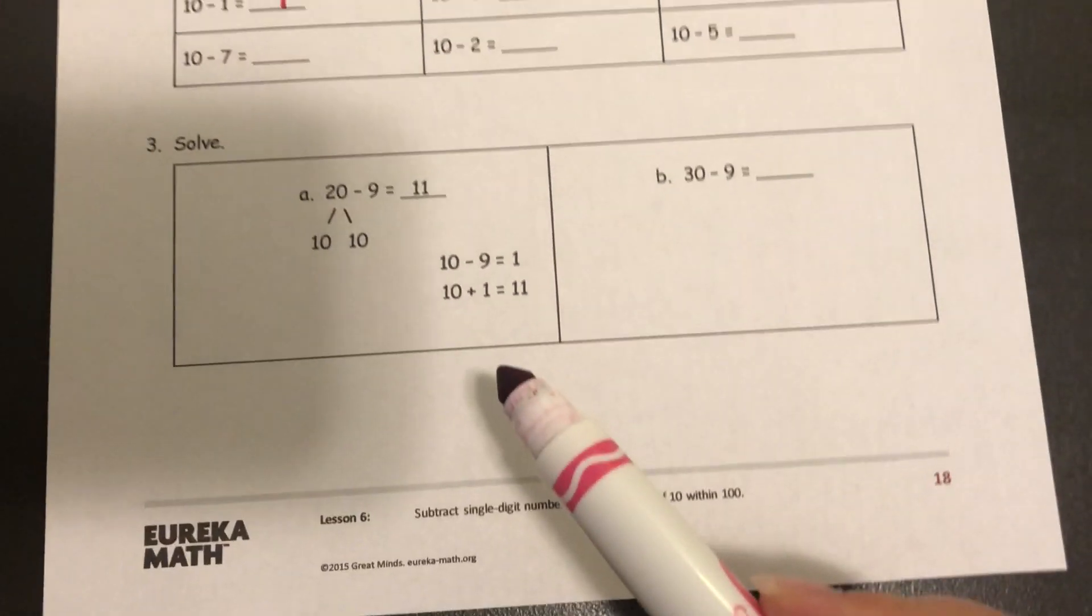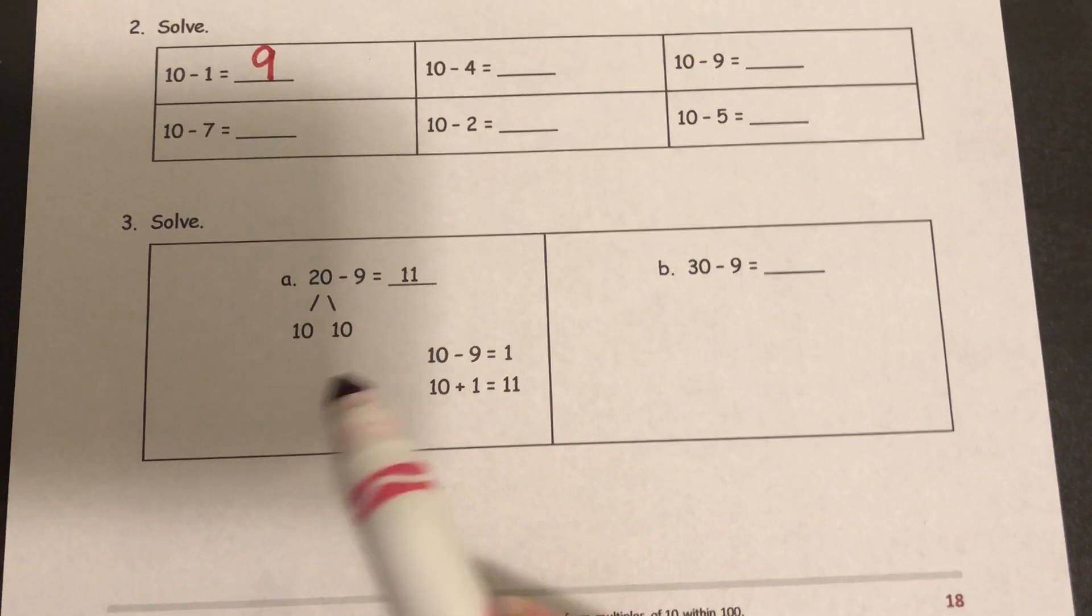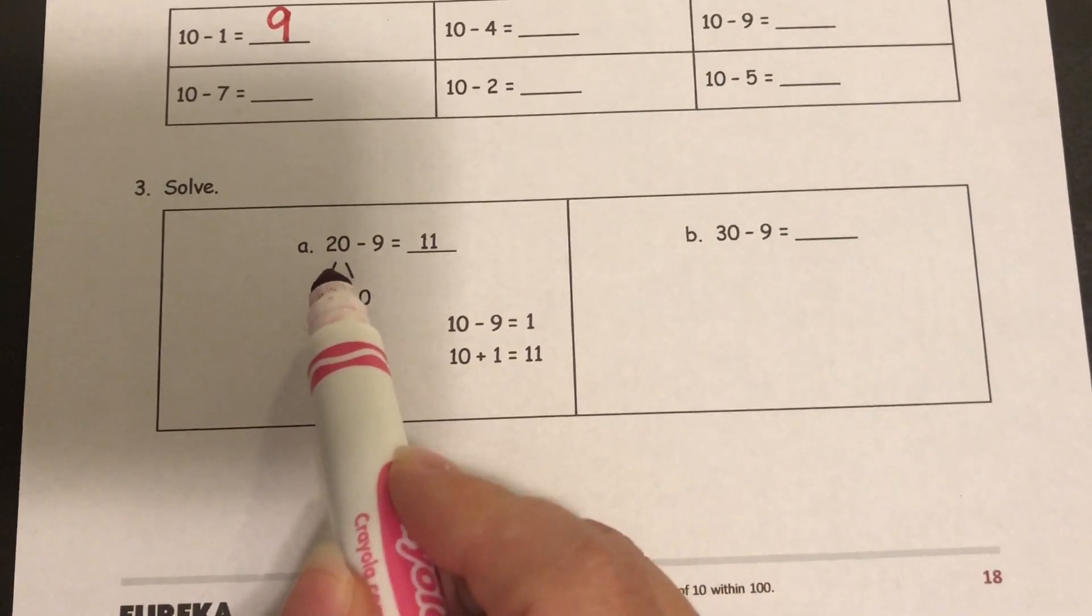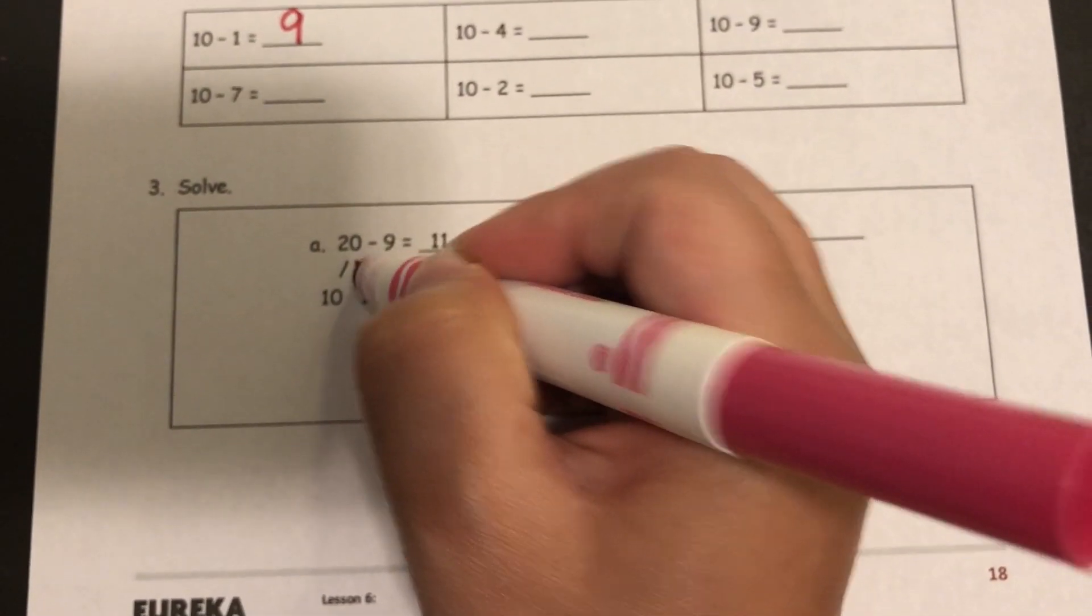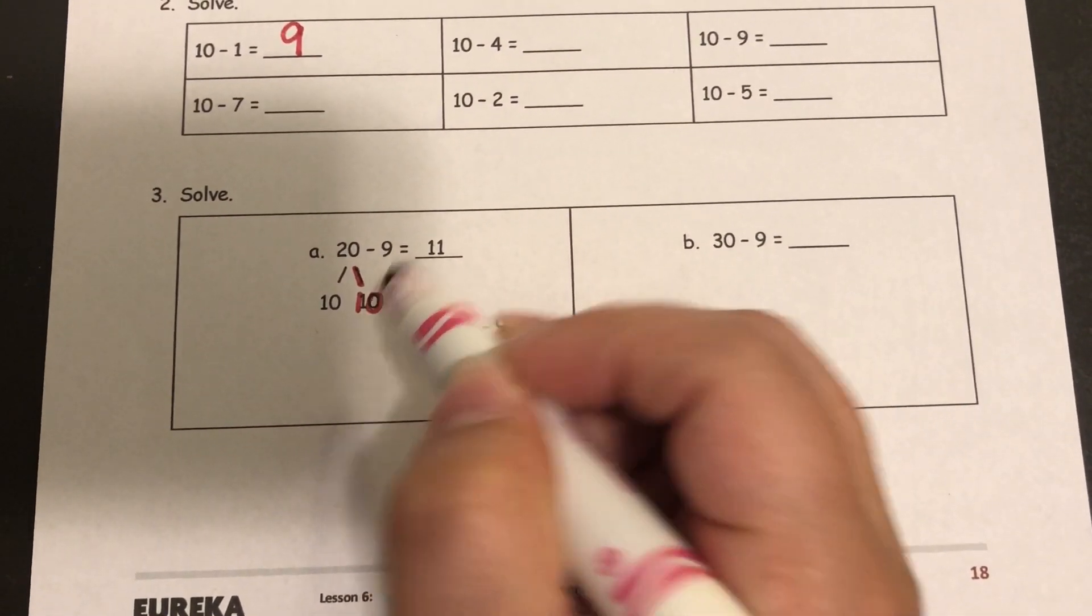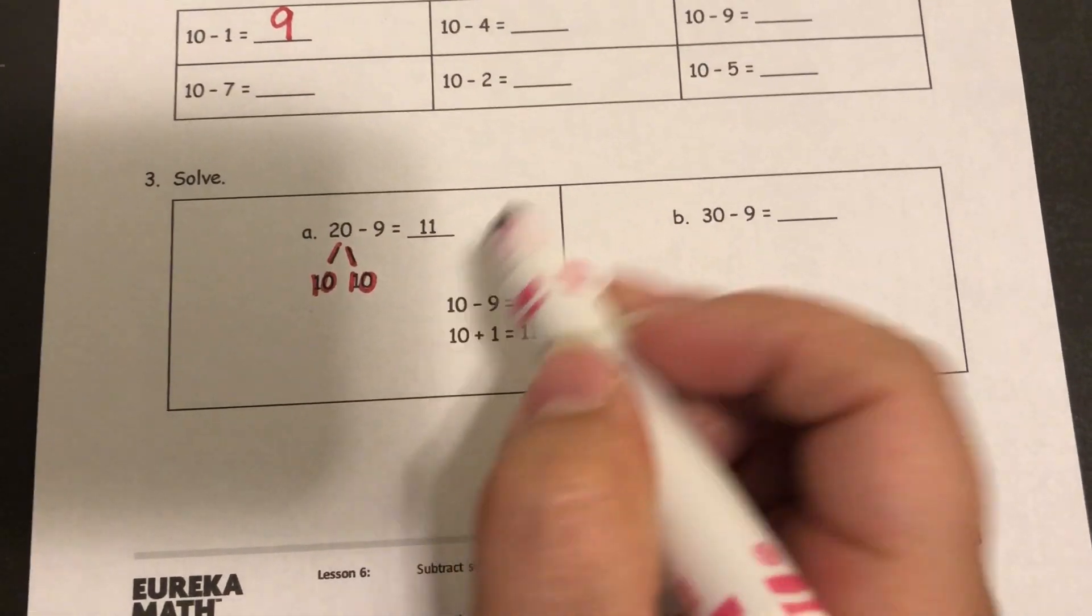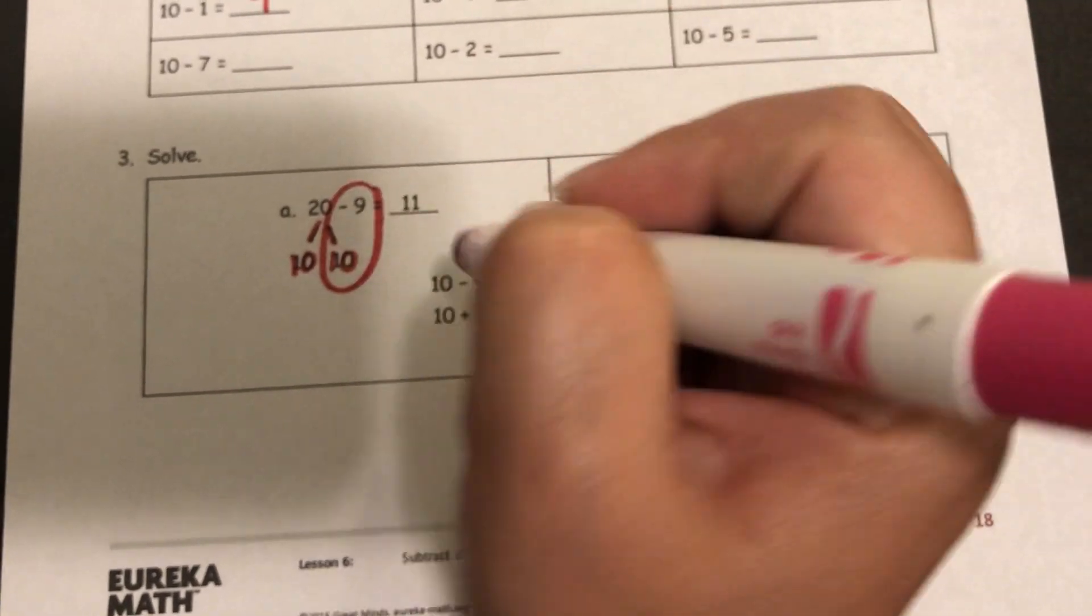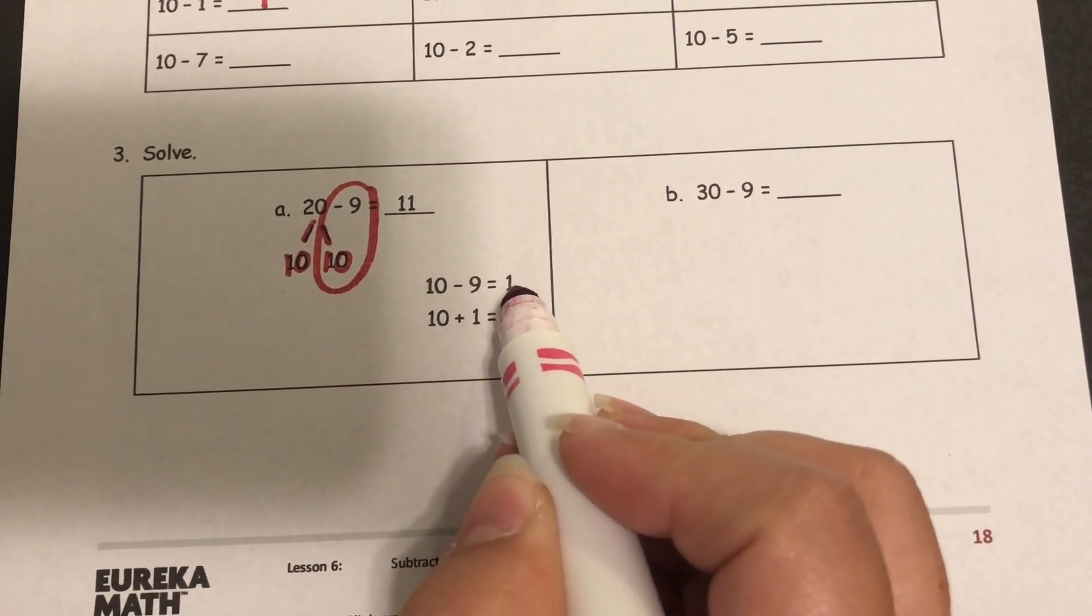And then on the bottom we'll get into the take out a ten strategy. They've done this one for you. So they started with 20 minus 9 and they took out a ten. If I take one of the tens away from 20 it leaves me with another 10. Now I can do my subtraction. 10 minus 9 which they showed down here.